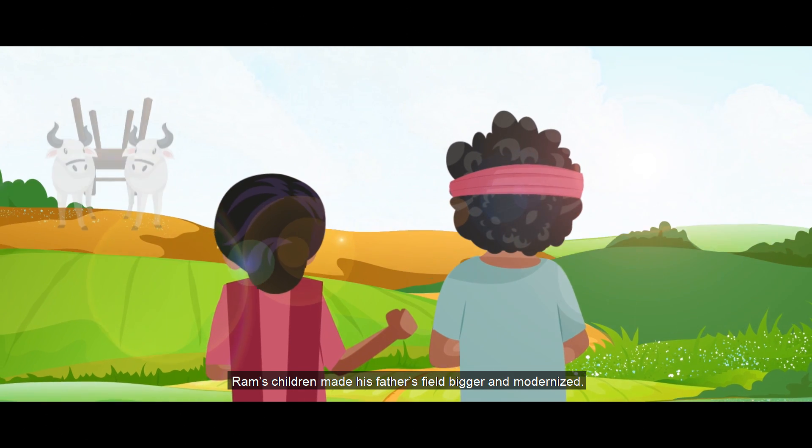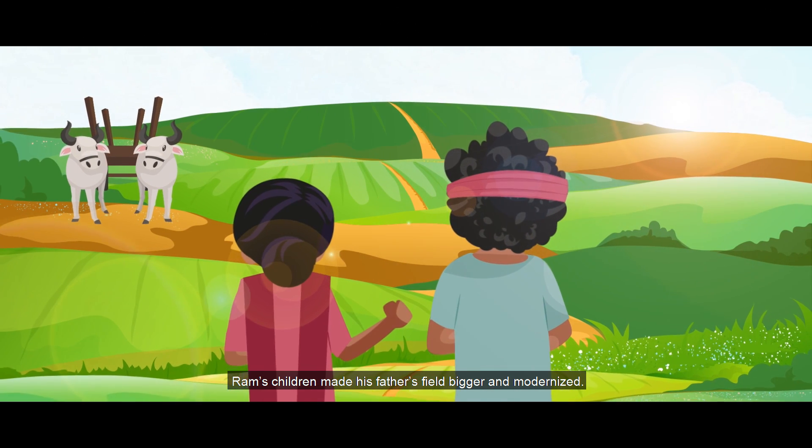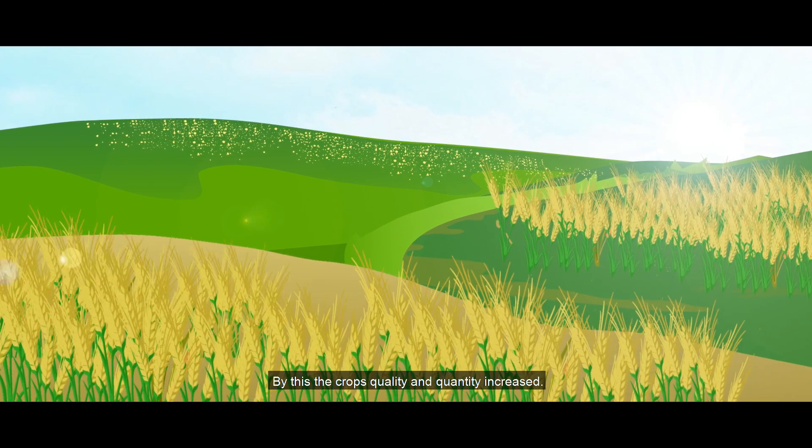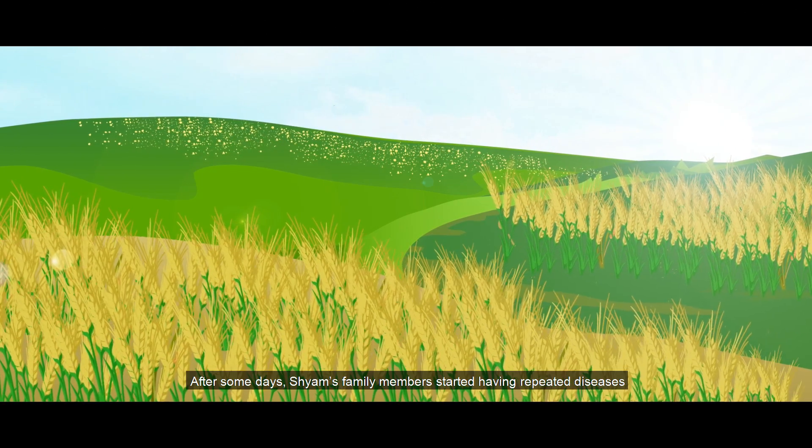Ram's children made his father's field bigger and modernized. By this, the crop's quality and quantity increased.